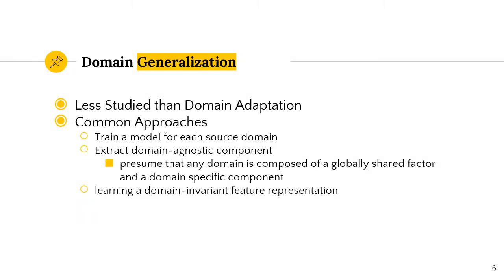Domain generalization is less studied than domain adaptation, mainly because it's newer, having been introduced in the last few years. Since then, many papers have been published, and there are three common approaches. In the first, a model is trained for each source domain, and when working on a new unseen target domain, the best model is estimated and used. In the second, a domain-agnostic component is extracted, believing any domain is composed of a domain-agnostic factor and a domain-specific component. In the third, a domain-invariant feature representation is learned to minimize the gap between target domains.